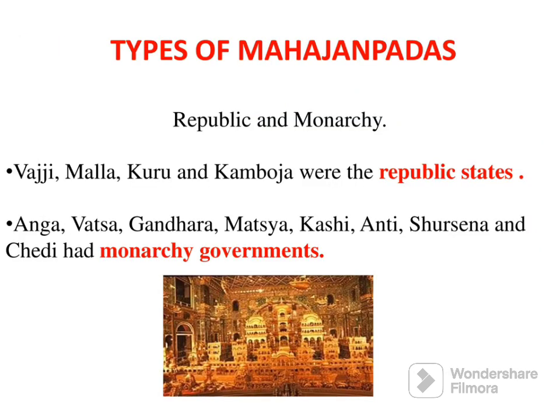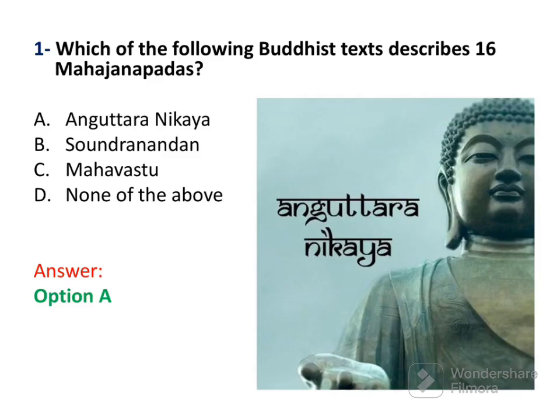Now, what are the types of Maha Janpad? There were two types: Republics and Monarchies. The Republics were Vajji, Mal, Kuru, and Kambuj. The rest were Monarchies.